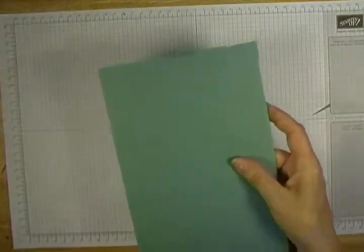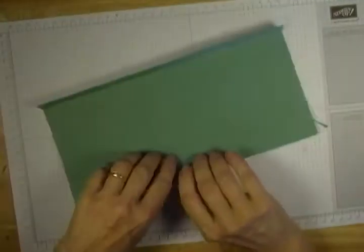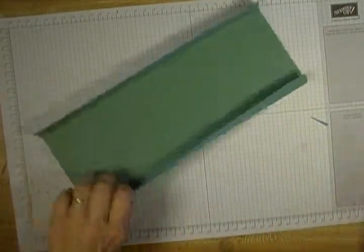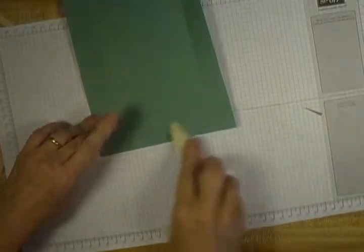Once you've finished with the scoring, you're going to need to fold all of your score lines and burnish them really well with your bone folder because that's going to give you your best result when it comes to completing your box.